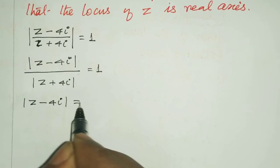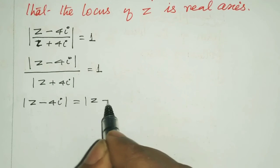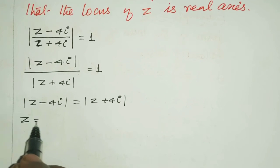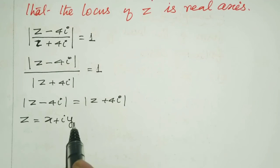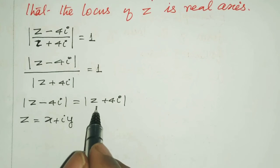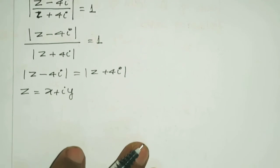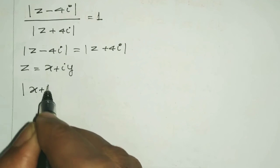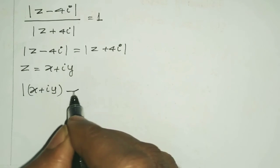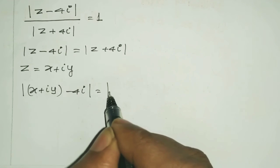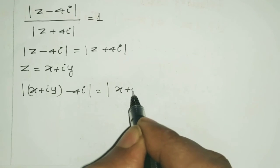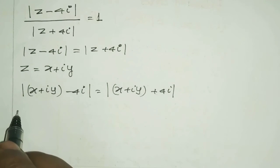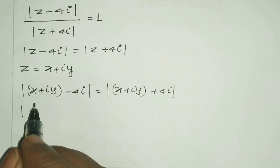So modulus of (z minus 4i) equals modulus of (z plus 4i). Substituting z equals x plus iy: modulus of (x plus iy minus 4i) equals modulus of (x plus iy plus 4i). That is, modulus of x plus i(y minus 4).